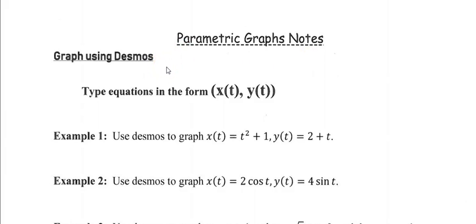We did graph these by hand in the previous lesson where we made the table of values and plotted the points. For Desmos, we will type our equations in the form like a point: you put the x equation in, a comma, and then the y equation with parentheses around it.